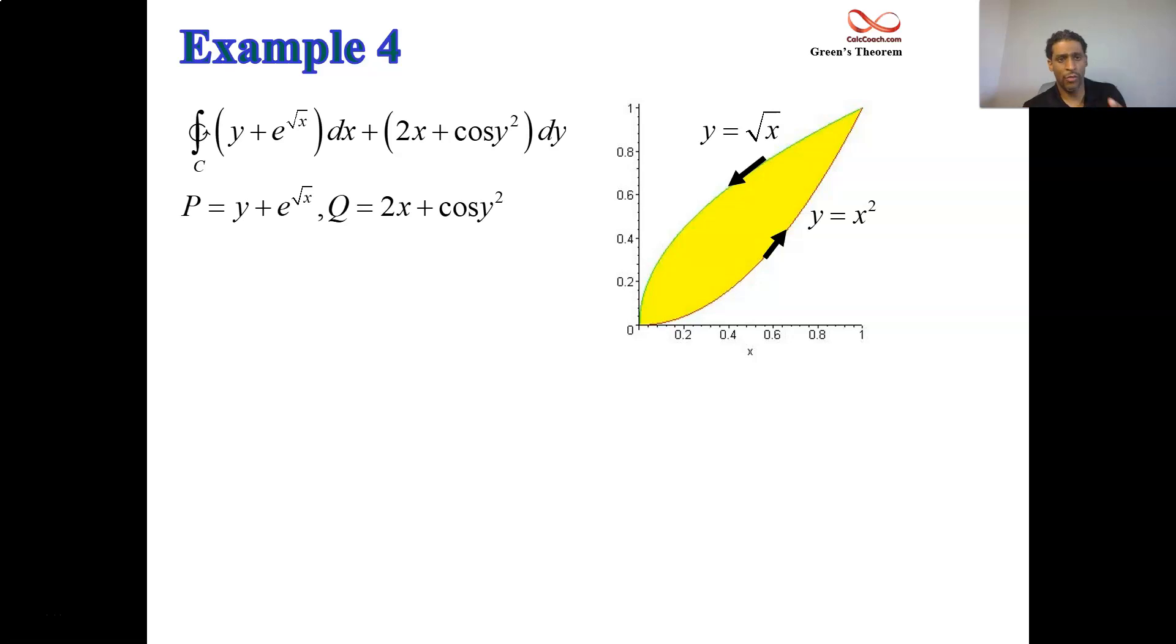With p being what's times dx and q being what's times dy, we can look at qx minus py. You see that the nastier parts of p involve x. The nastier part of q involves y, but when we take qx minus py, we get exactly a 1. And so we can trade this in for just the area of that region because qx minus py is a 1.